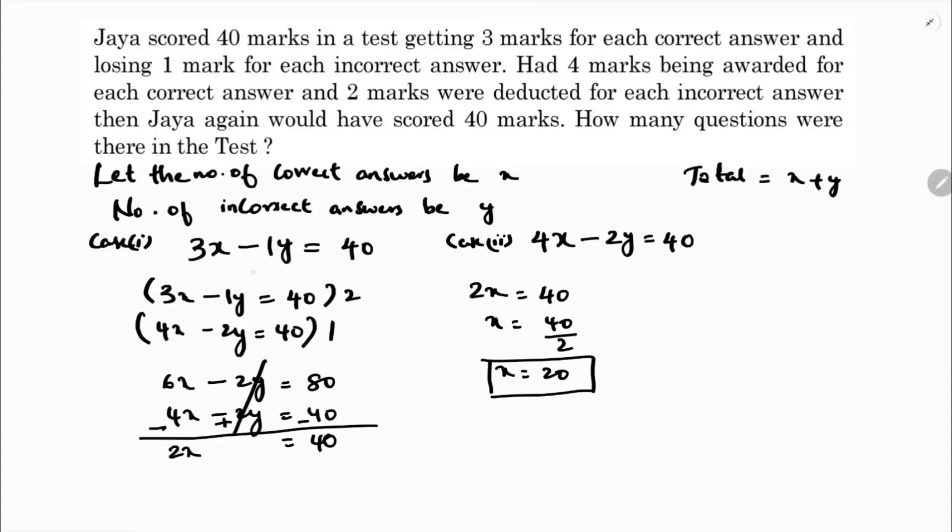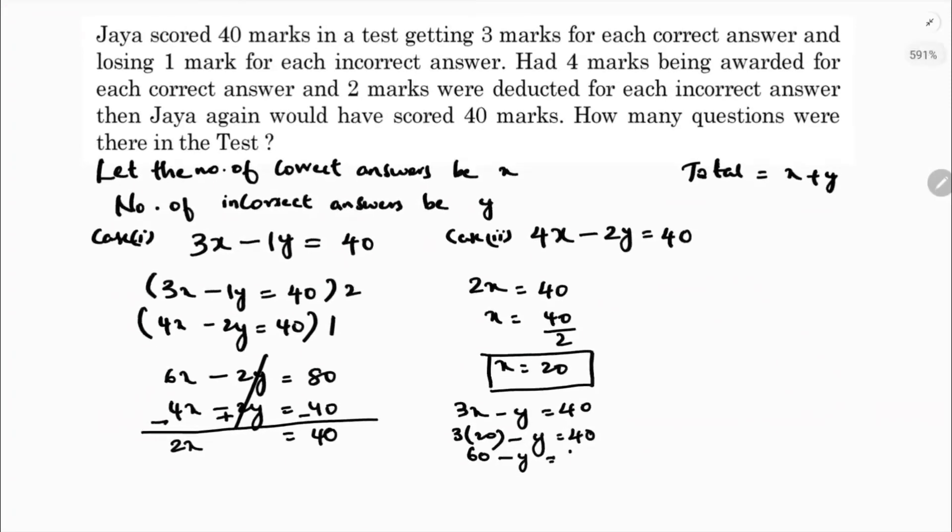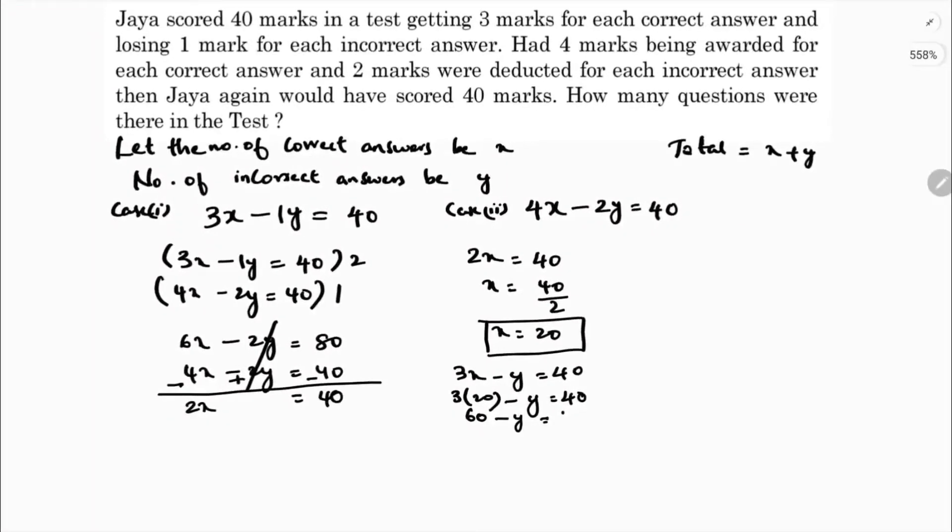If x is 20, take any one equation and substitute the values. Here 3x minus y is 40, so 3 into 20 minus y is 40. 3 into 20 is 60 minus y is 40. So 60 minus 40 equals y, y is 20.